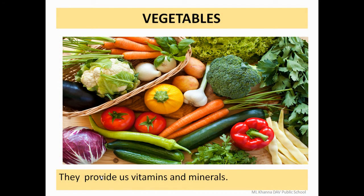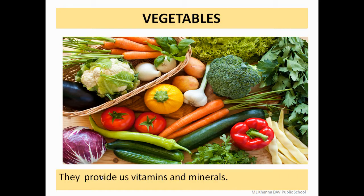Next is vegetables. They provide us vitamins and minerals. Some vegetables are eaten raw and some are eaten cooked. Vegetables which are eaten cooked include spinach, ladyfinger, brinjal, etc. Vegetables that can be eaten raw as well as cooked include carrot, radish, onion, tomato, etc.